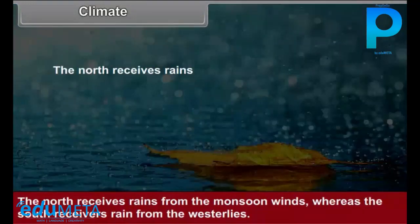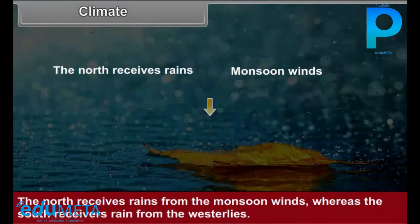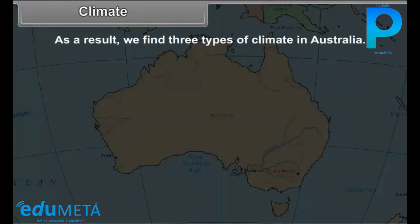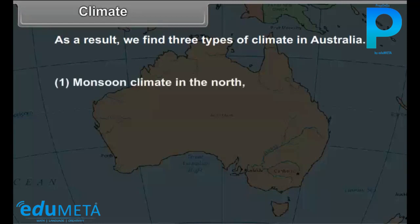The north receives rains from the monsoon winds, whereas the south receives rain from the westerlies. As a result, we find three types of climate in Australia: number one, monsoon climate in the north; number two, arid climate in the central part; and number three, temperate climate in the south.